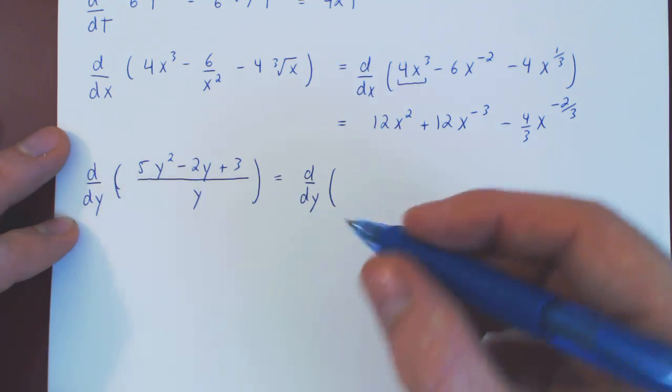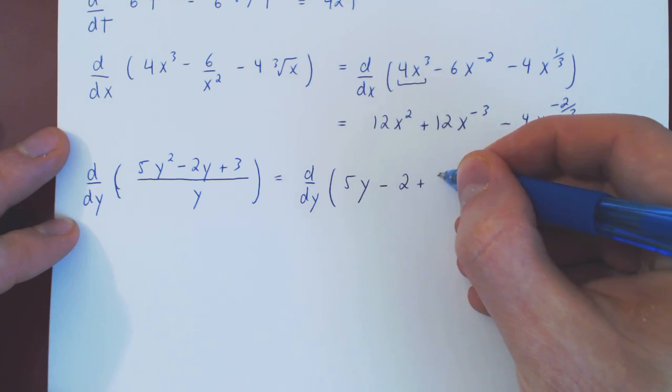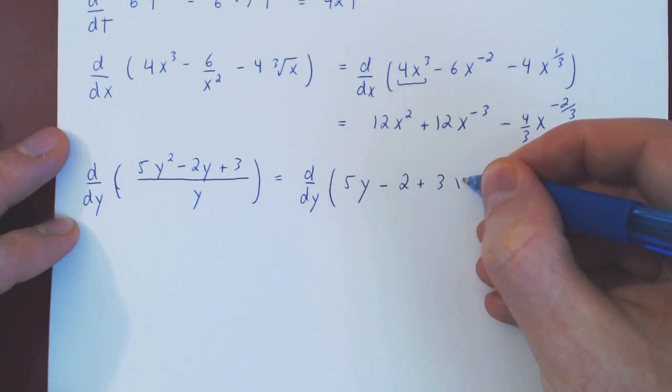So 5y squared over y is 5y, minus 2y over y is minus 2, plus 3 over y. 1 over y is y to the negative 1.